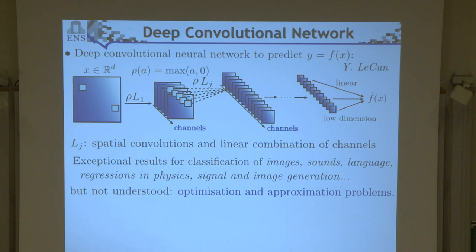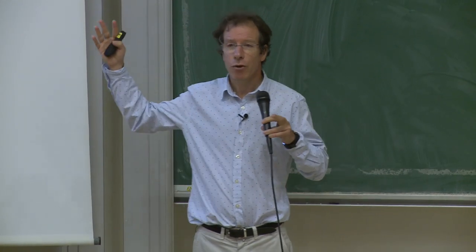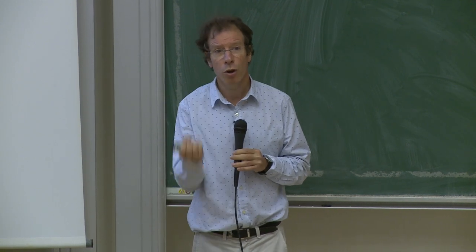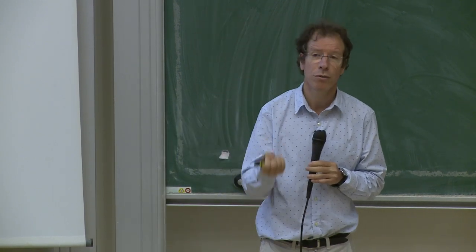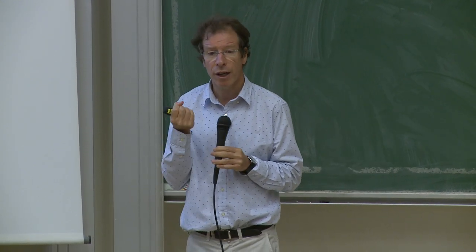A neural network which is just a series of fully connected layers with no prior in the architecture is basically not going to learn. In order to learn, you need to put prior information in your network by specifying the architecture.